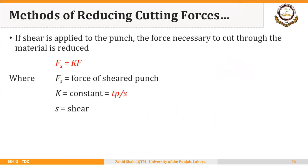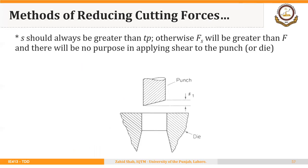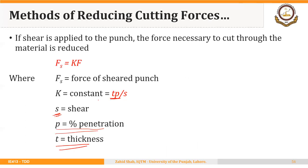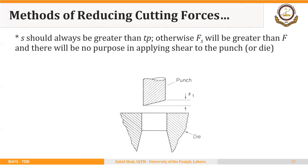When shear is applied to the punch, the force necessary to cut through the material is reduced by a factor K, where K = T·P / S. Here T is sheet thickness, P is percent penetration, and S is the shear. S must always be greater than T×P to ensure K is less than 1; otherwise the force after applying shear will be greater than the force without shear, making the shear application pointless.